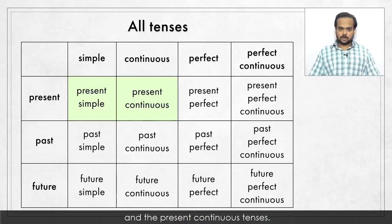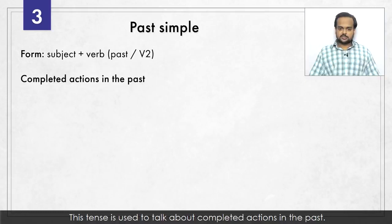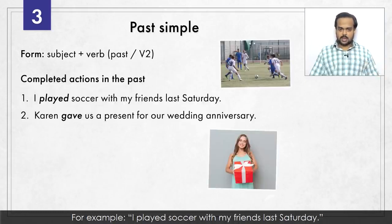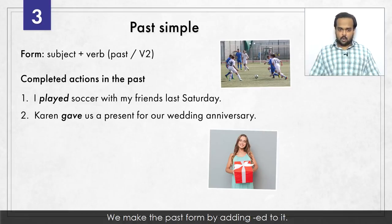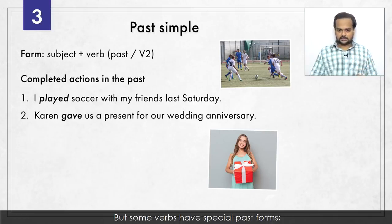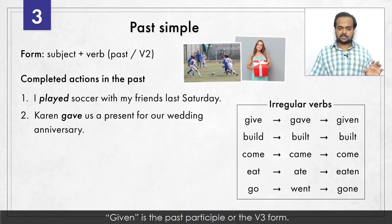Let's now talk about the past simple and past continuous – past simple first. We make the past simple tense with a subject and a verb in the past or the V2 form. This tense is used to talk about completed actions in the past. For example: I played soccer with my friends last Saturday. Karen gave us a present for our wedding anniversary. The verb in the first sentence is 'play' – we make the past form by adding -ed to it. But some verbs have special past forms, like 'gave,' which is the past tense of 'give.' These are called irregular verbs.